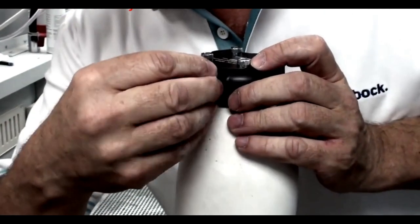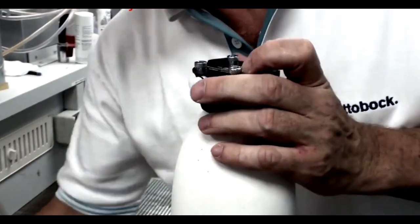Take the lamination dummy for the expulsion valve and screw it in place.